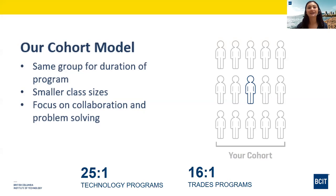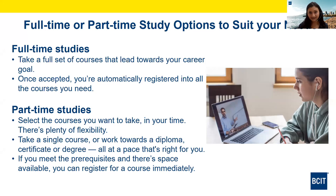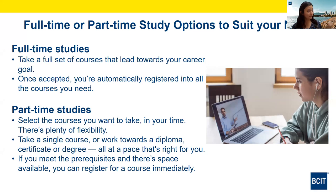BCIT offers certificates, diplomas, degrees, and even master's degrees, but we're different from a college or university. We're a polytechnic institute, meaning our programs focus on team-based learning and applied education. We offer both full- and part-time study options. Full-time studies allows you to take a full set of courses and you're automatically registered in all the courses you need. Part-time studies gives you flexibility — you can take a single course or work towards a credential at a pace that's right for you.